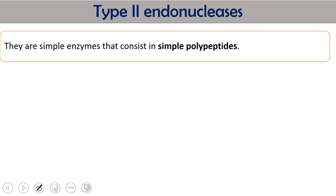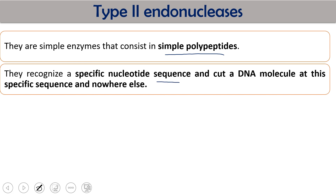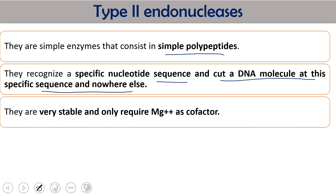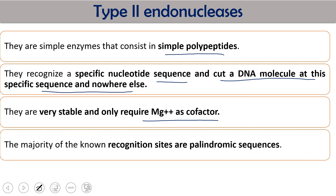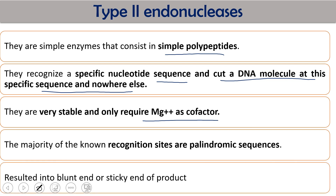Type II enzymes are very simple enzymes consisting of simple polypeptides. They recognize a specific nucleotide sequence and cut the DNA at that specific sequence — nowhere else. So a defined, desired product is obtained because you know exactly where it will recognize and digest. They are very stable and only require magnesium ions — no ATP and no S-adenosyl methionine needed. The majority of known recognition sites are palindromic sequences, resulting in either blunt end or sticky end products.